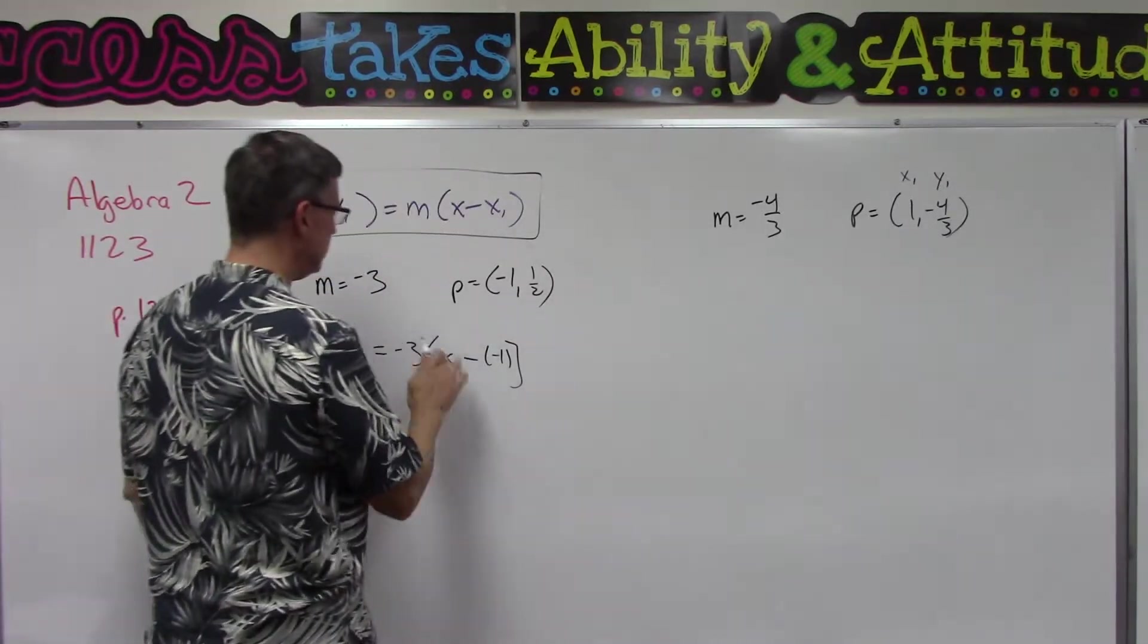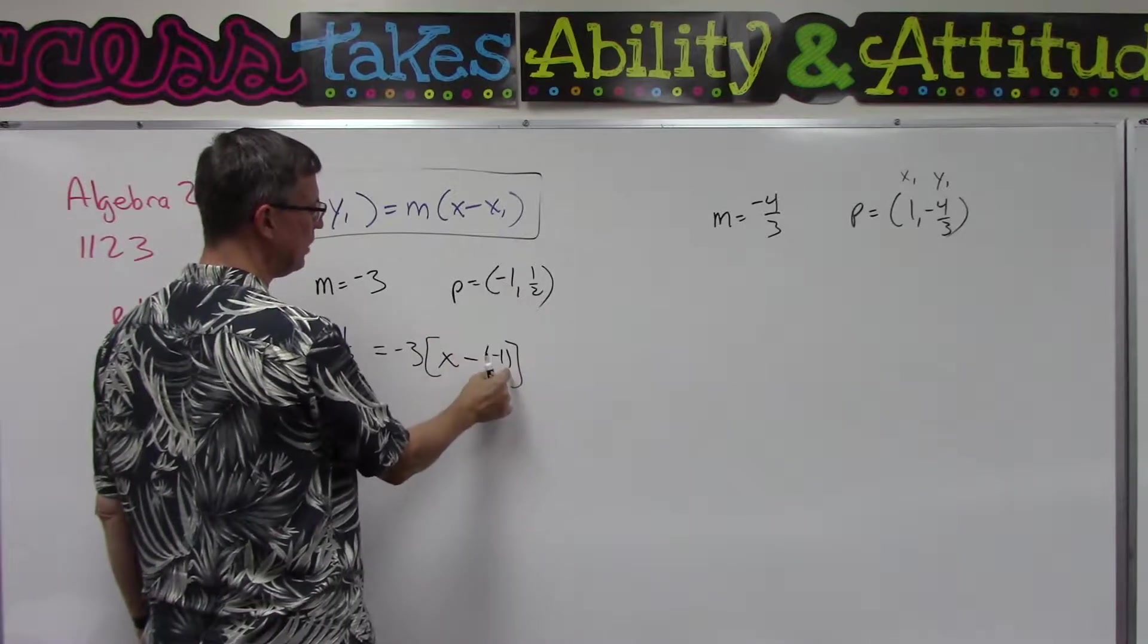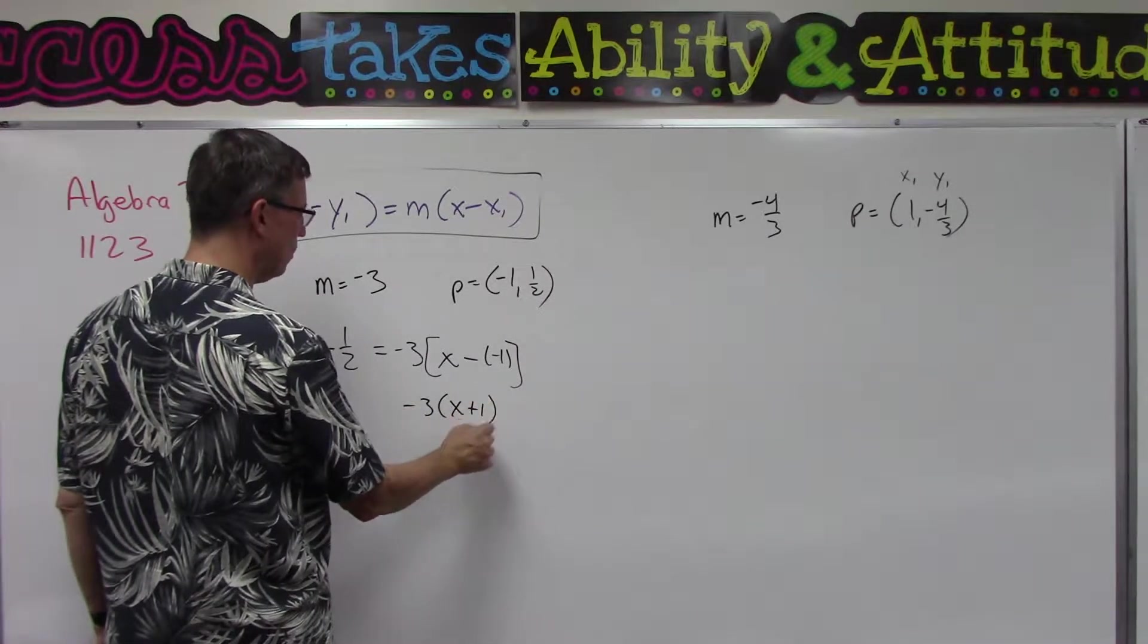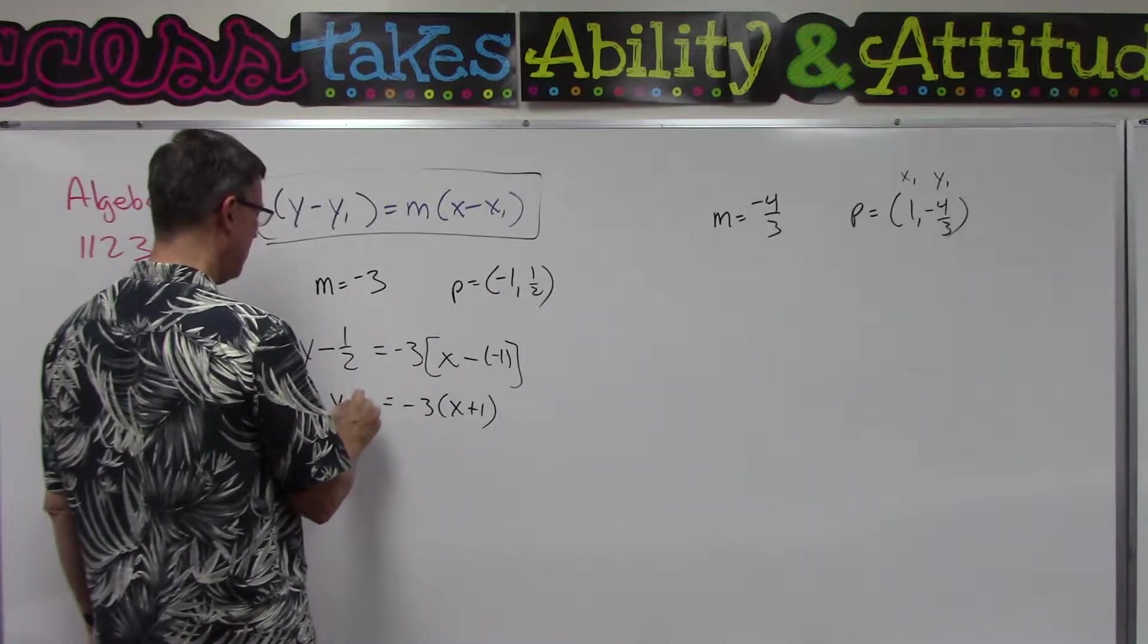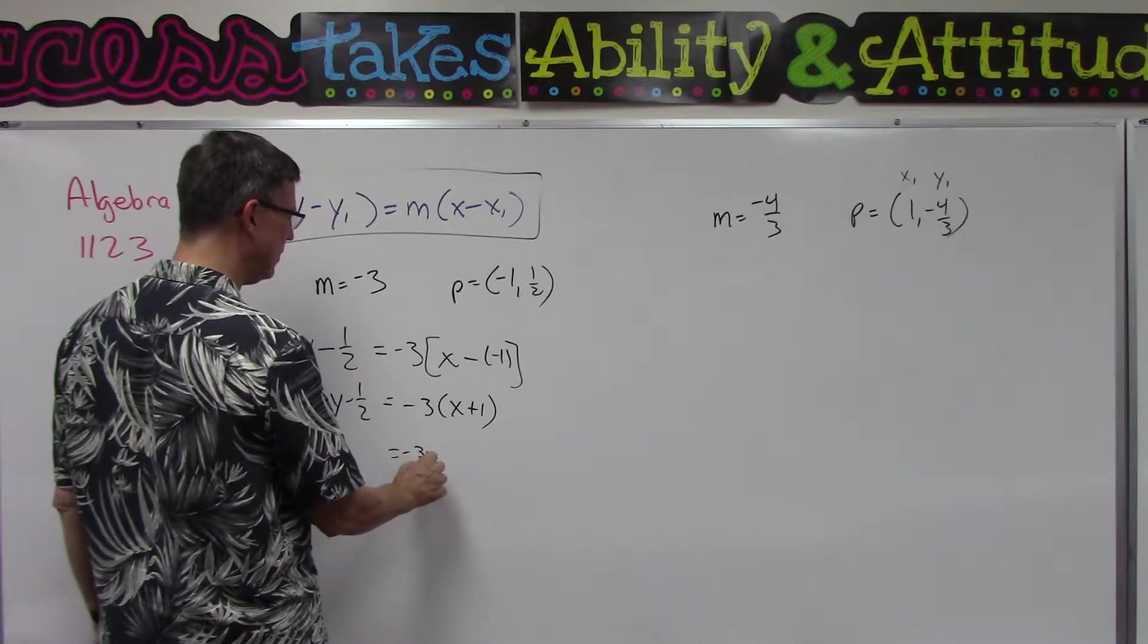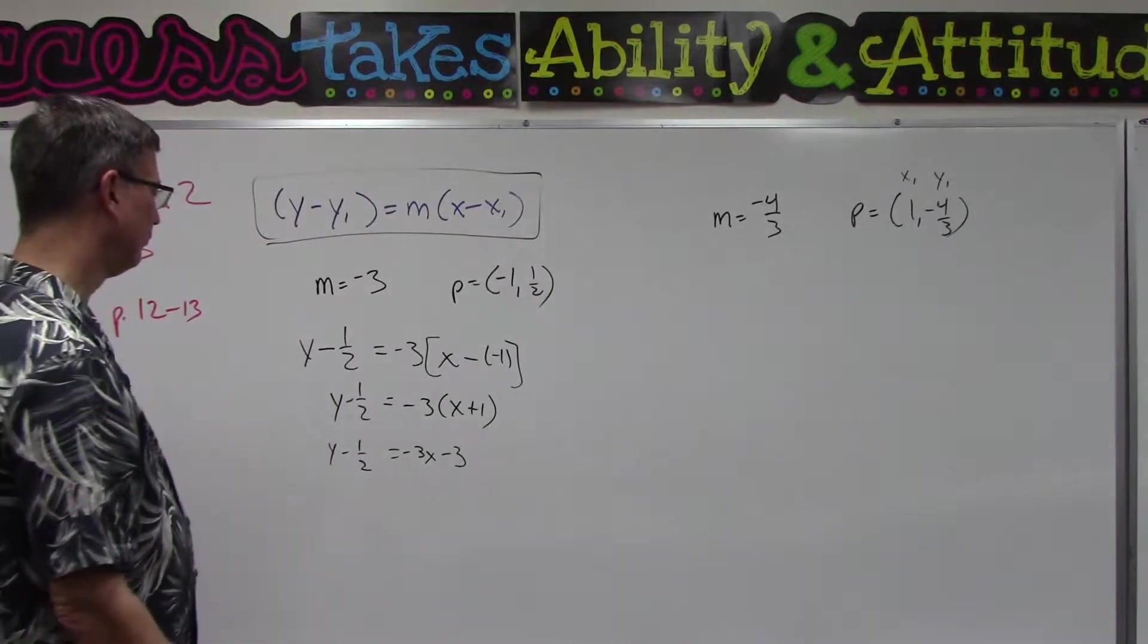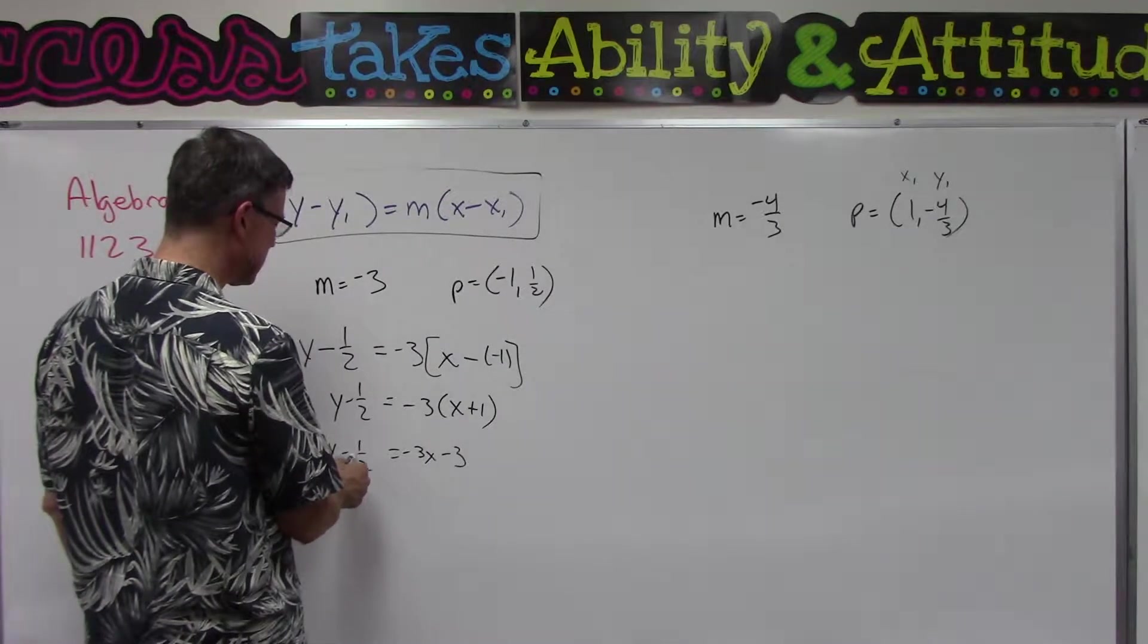Now it's confusing but I put parentheses here so I can plug in the negative 1, so basically this just gives me negative 3 parentheses x plus 1, and y minus 1/2. So let's distribute that out - outside times the first, outside times the second - and then we want to bring the 1/2 over here to this side, so we'll add 1/2 and add 1/2.